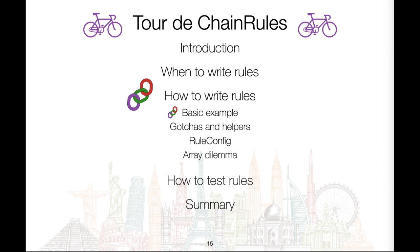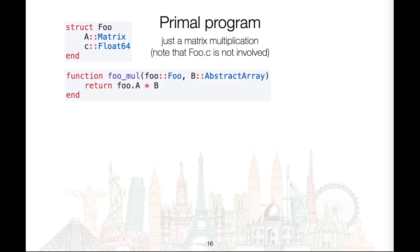Now that we've determined when it is appropriate to write rules, let's take a look at how to write rules by going through a basic example. We'll look at a primal program that is just a matrix multiplication, but for illustration purposes we include a custom struct Foo with two fields: a matrix A and a float C. The function we will write the rule for is foo_mul, and it multiplies the matrix field A with some other array B. The C field is not involved and has no effect on the output.